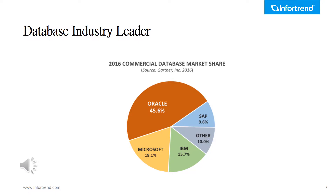Now, let's talk about the industry leaders of the database system. As shown in this slide, the pie graph is divided into the leading vendors of the database market with the percentage of each vendor. In first place is Oracle Database, which is also the biggest proprietary multi-model database management system in the world. Coming second is Microsoft SQL, then IBM Database in third, and SAP's database in fourth place. From our point of view, a storage solution must support at least the top two database vendors — Oracle and Microsoft — and we at InfoTrend are proud to say that our systems support both.